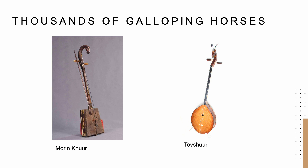Here are the musical instruments used for Thousands of Galloping Horses. In the first picture, we have the morin khuur, also known as the horse head fiddle. It is a traditional Mongolian string instrument that has a carved horse head at the top of the neck, played with a bow and produces a unique sound that is instantly recognizable. In the second picture, we have the tofshur, which has a long and narrow wooden body with two strings made of horse hair. The strings are played with a plectrum, usually made of bone, horn, or ivory. It has a distinctive sound characterized by its deep resonant tones. Today, both instruments continue to be popular in Mongolia and have gained recognition and popularity.